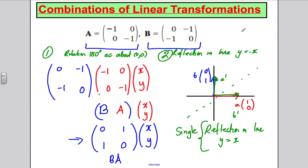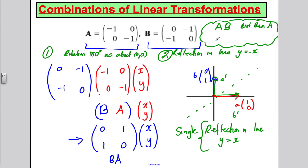The key point to remember: if you're working out AB, that means B first, then A. Or if you work out BA, you're actually doing A first, then B. They are different — the order of multiplication makes them different transformations. So let's go on and do an example straight away.